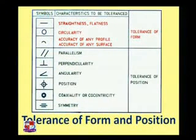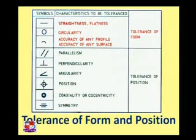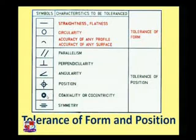This is the overview of tolerance form and position symbols. A straight line indicates straightness or flatness; a circle or curve indicates circularity; and another symbol indicates accuracy of any profile or surface. For tolerance of position: parallelism, perpendicularity, and angularity each have their symbols. Position, coaxiality or concentricity, and symmetry also each have their respective symbols.